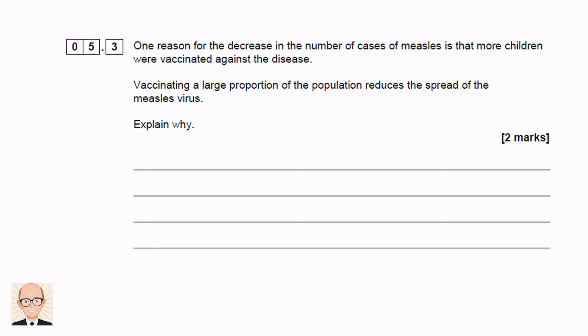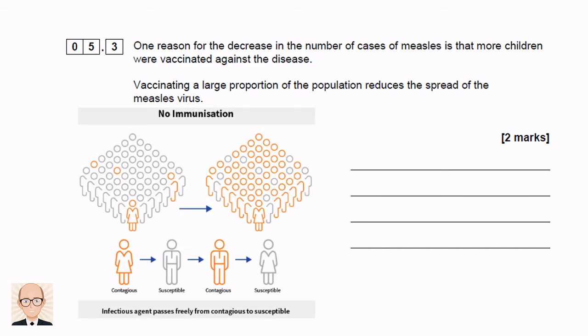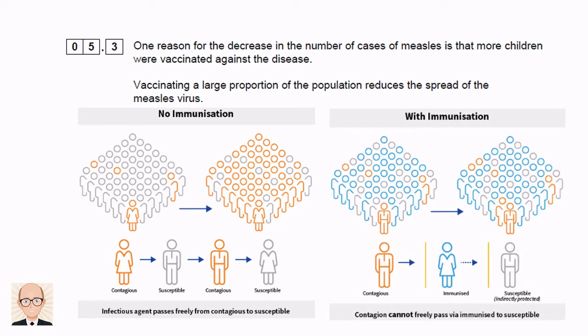We're asked to explain why vaccinating a large proportion of the population reduces the spread of the measles virus. Measles spreads from person to person via droplets emitted in coughs and sneezes. If nobody is vaccinated, everybody is susceptible. One person with measles passes it to those near them, and they spread it to their friends until most people have caught it. However, if you vaccinate people, this gives them immunity so they won't catch it. If they don't catch it, they can't pass it on, and even unvaccinated people have a reduced risk. You don't even need to vaccinate everybody — just most.